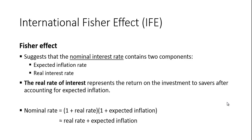The formula is: the nominal rate equals one plus the real rate times one plus expected inflation. A lot of times we approximate this as the real rate plus expected inflation. I've done a separate video on the Fisher effect explaining why this approximation works well, and I'll post a link below.